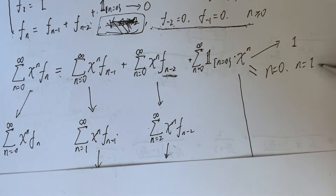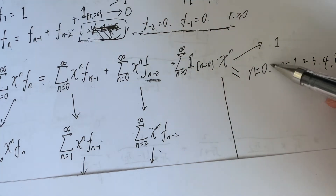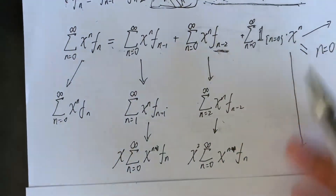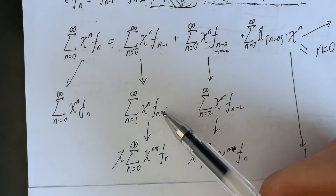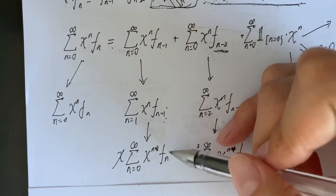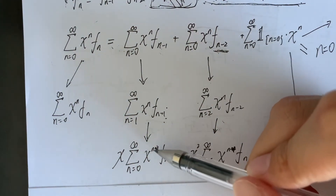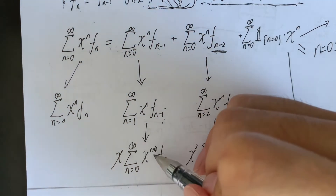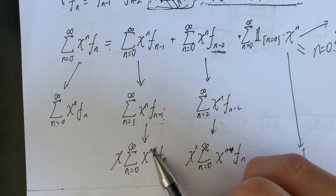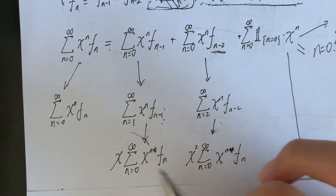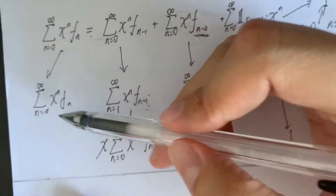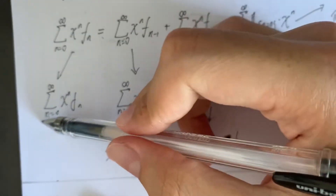For the F(n-1) sum starting at n=1, we apply a change of variable: substitute n-1 with a new n, so x^n becomes x^(n+1). We factor out x, giving x multiplied by the full summation. The same argument applies to the F(n-2) term, giving x² multiplied by the full summation.